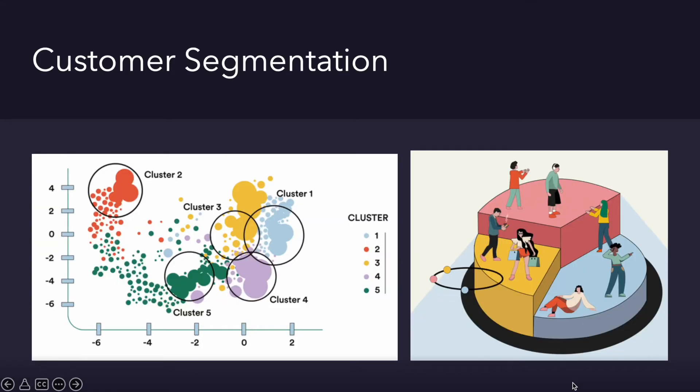Think that you work in a company and you have so many customers. You know that your customers have different preferences, but some of them share the same ones. So you want to offer specific campaigns for each group — then you can use machine learning to make customer segmentation, analyze your customers, and cluster them. Today, companies try to produce the best campaign for their target customers and machine learning is quite helpful for this type of task.